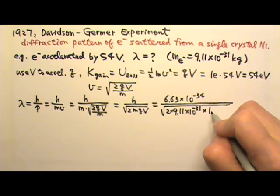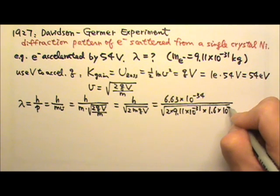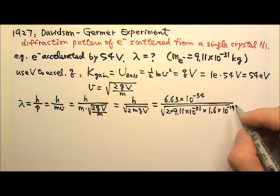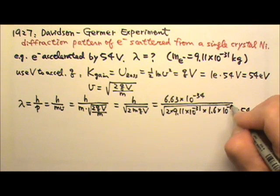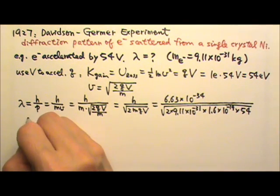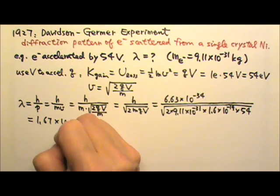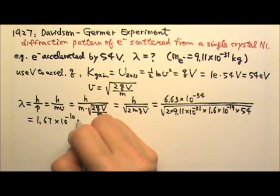For an electron, the charge is 1.6 times 10 to the negative 19th Coulomb, and then the voltage is 54 volts. So if I do this, I will find that the wavelength to be 1.67 times 10 to the negative 10th meter.